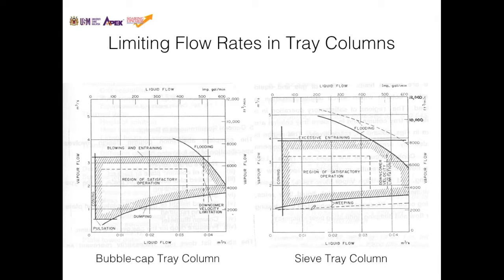Comparing this with the sieve tray — since they are displayed side by side, we can directly compare between these two figures. We see that the sieve tray is able to prevent flooding better than the bubble cap tray column, due to this line being at a higher level compared to this.